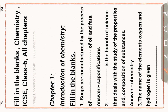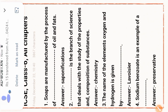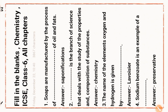Next question: dash is the branch of science that deals with the study of the properties and composition of substances. Answer: chemistry. Chemistry is the branch of science that deals with the study of the properties and composition of substances. Next question: the names of the elements oxygen and hydrogen were given by the scientist Lavoisier.